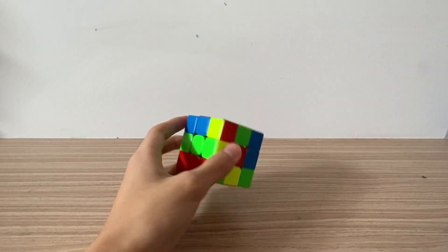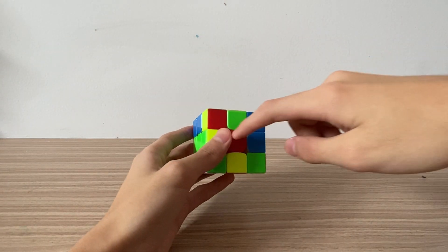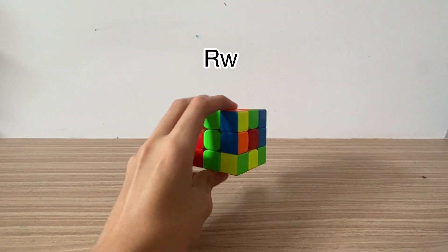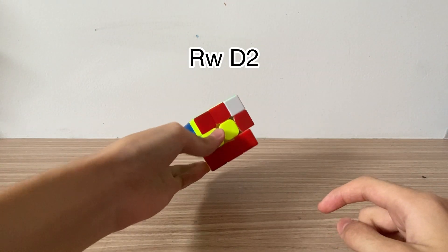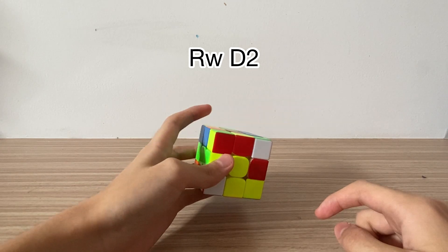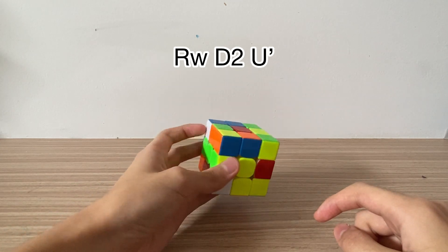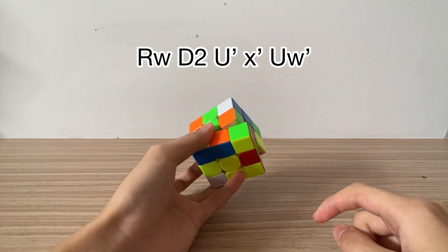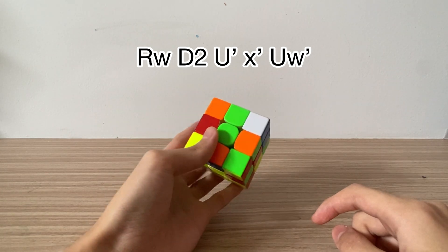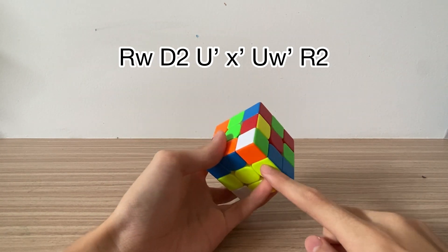So here is another cross example. I will insert this with an R Y, insert this with D2, and then I'll just put it here and then do a wide move here and then insert this here and then do F prime.